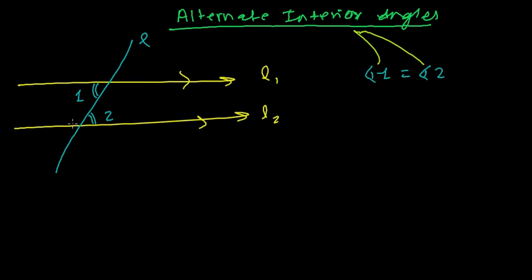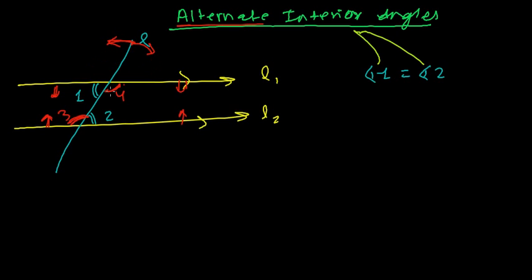Similarly, we will have one more pair. If this is angle 3, then this will be angle 4. From the name itself — alternate means both sides of the transversal, from this side and this side — and both should be interior, meaning in the internal part. Angle 3 is an internal part and angle 4 is also an internal part, not outside. Such angles are always equal and are called alternate interior angles.